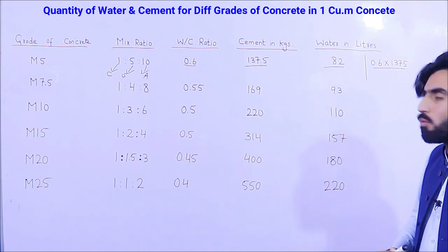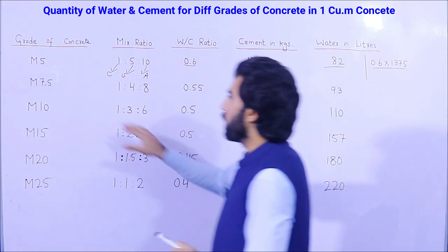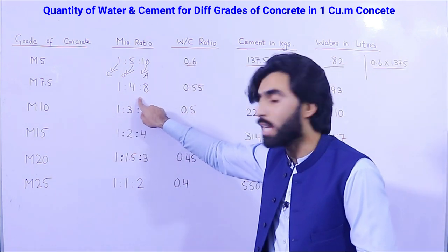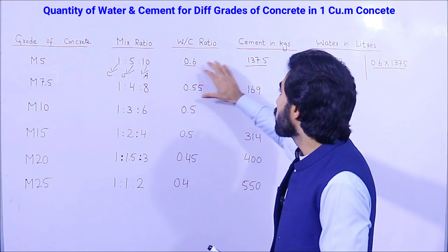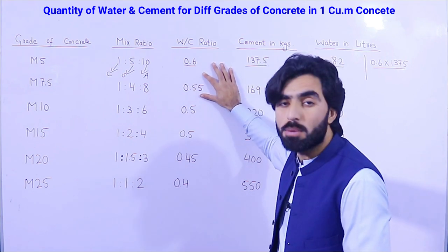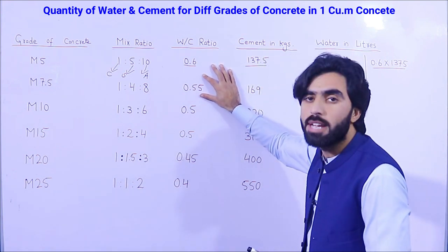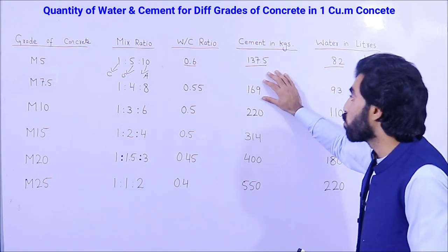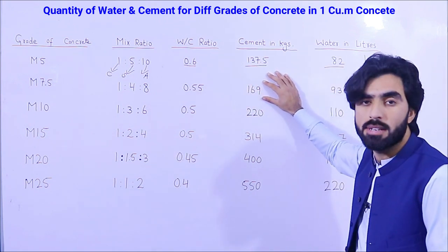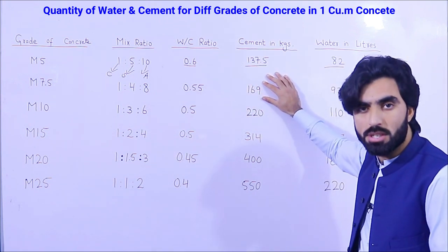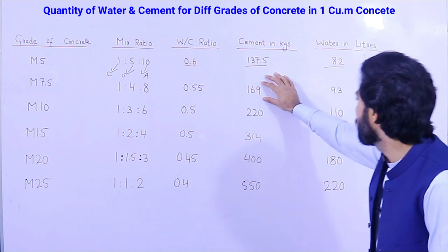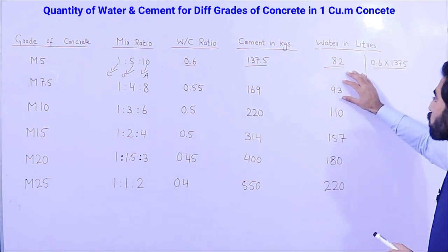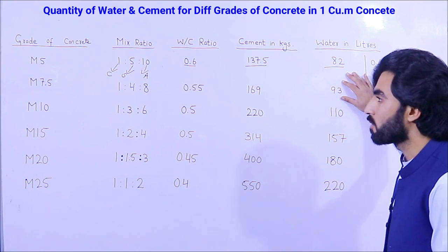For M7.5 grade concrete, the mix ratio is 1:4:8 and the water-cement ratio is 0.53. You require 169 kg of cement and 93 liters of water for one cubic meter of M7.5 concrete.